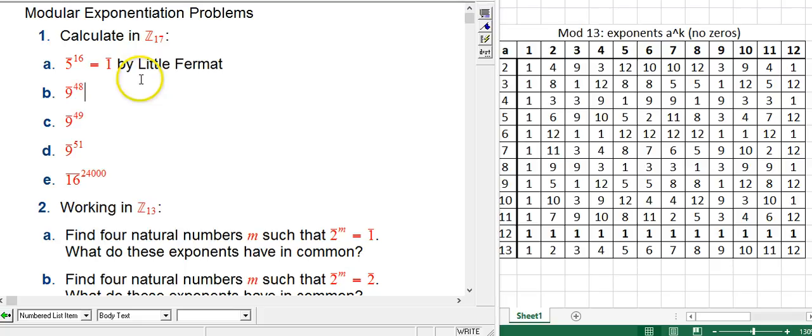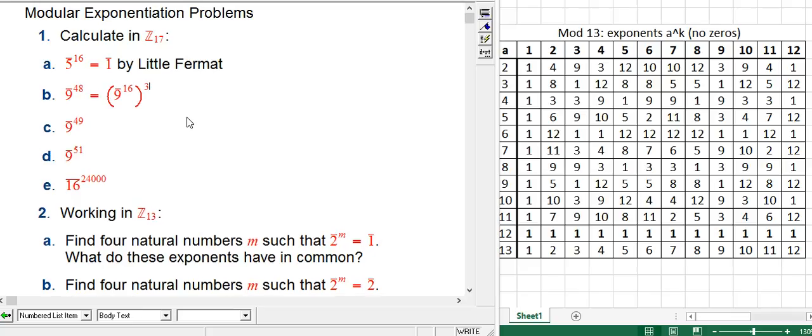What about 9 to the 48th power? Well, 9 is another non-zero element of Z mod 17. I didn't pick it to be special in any way, except that it's non-zero. But the 48, you might notice, is quite special. This is going to be the same thing as 16 copies of 9 multiplied together.